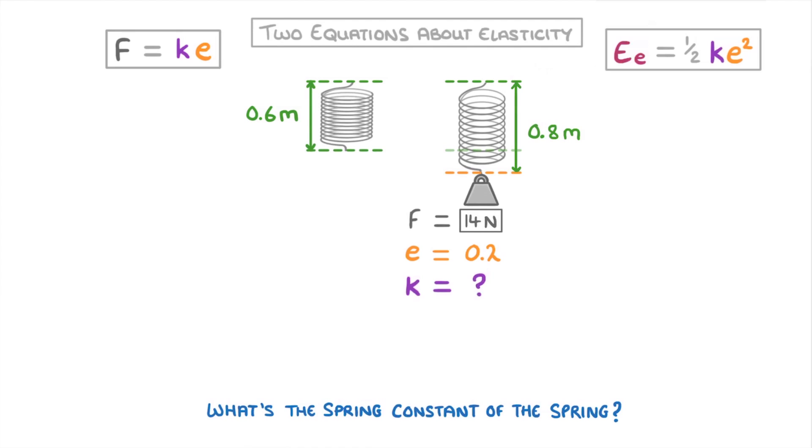If we look at our two equations, we can see that we would have to use F equals KE, and then rearrange it to get F over E equals K. Which, if we plug in 14 divided by 0.2, gives us 70 newtons per meter as our spring constant.